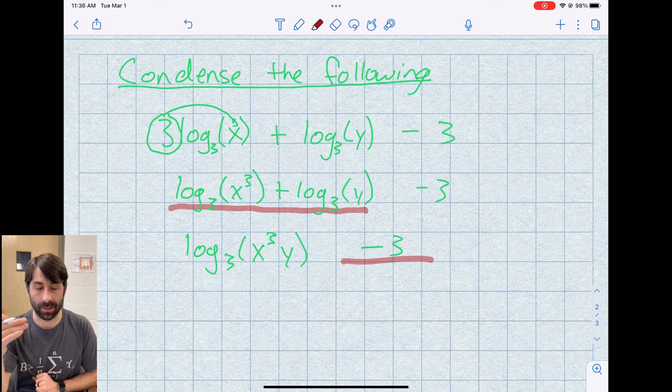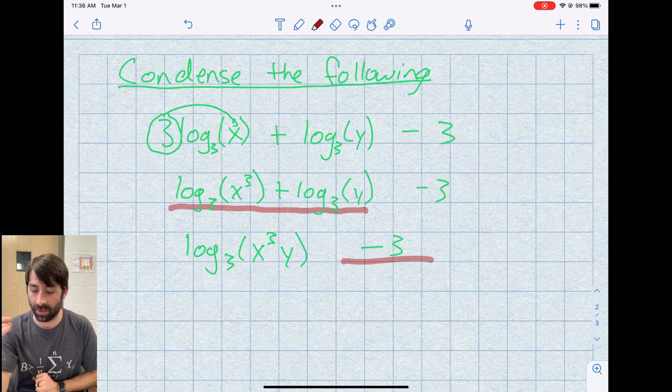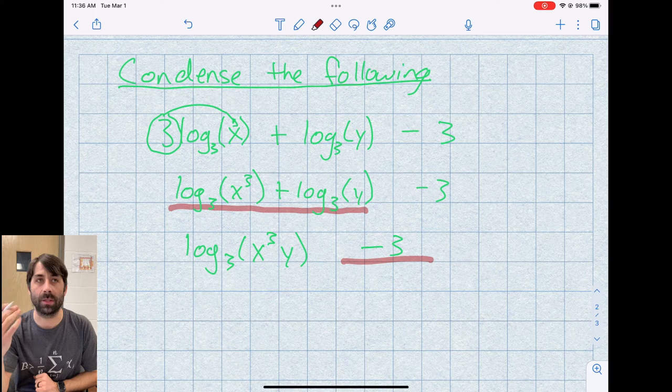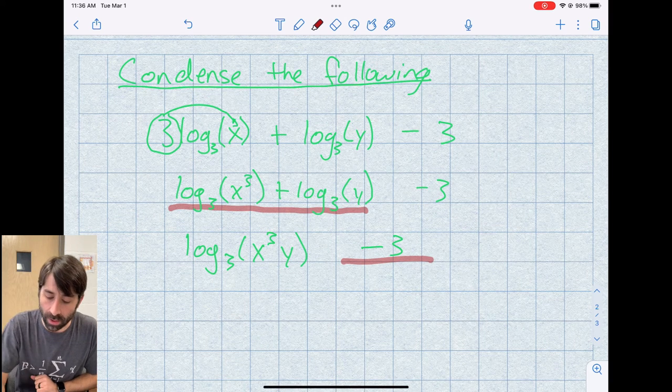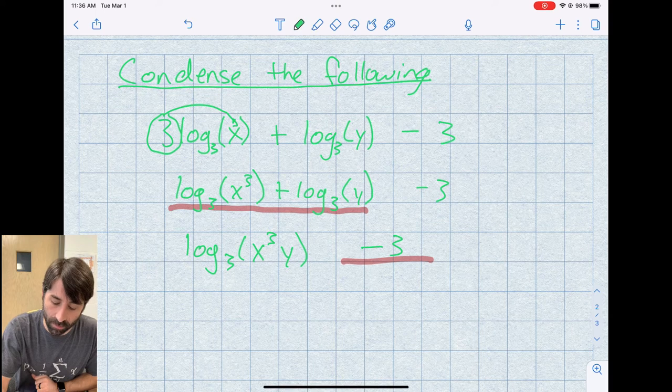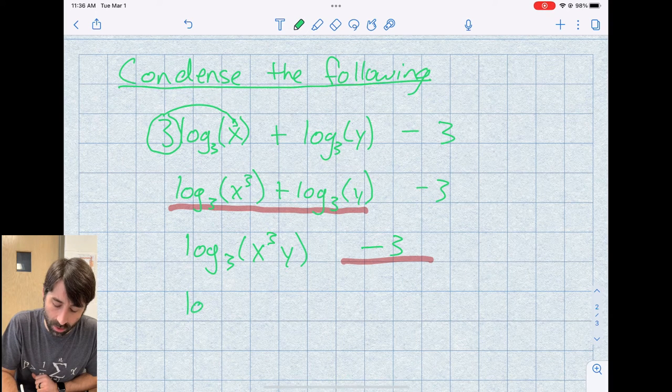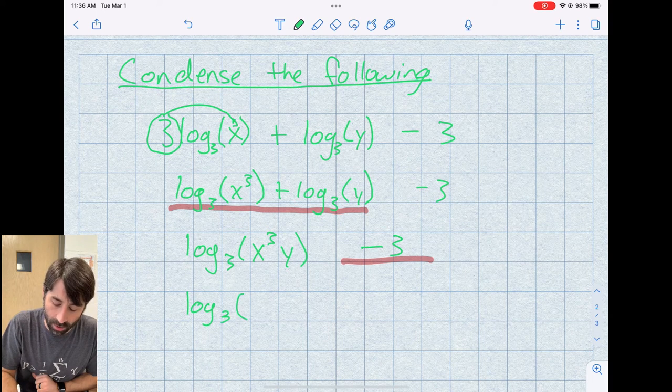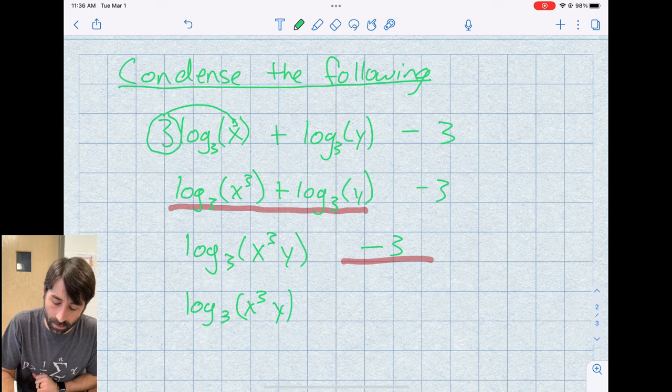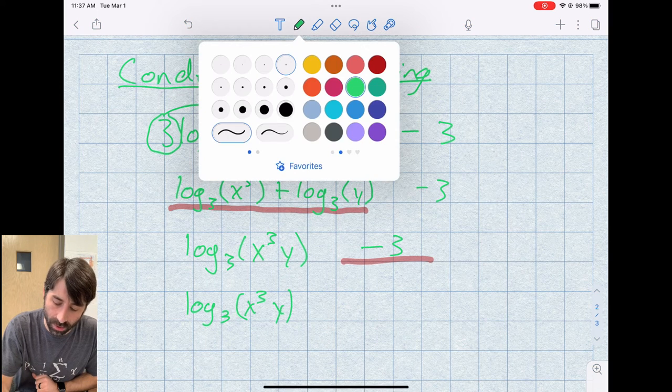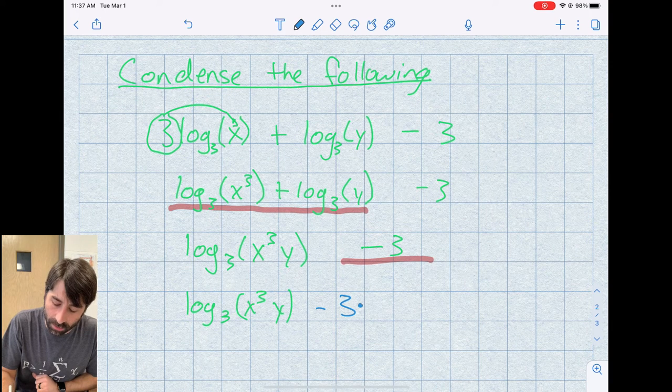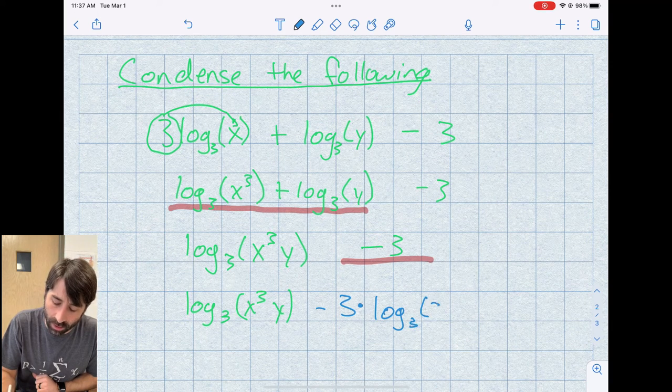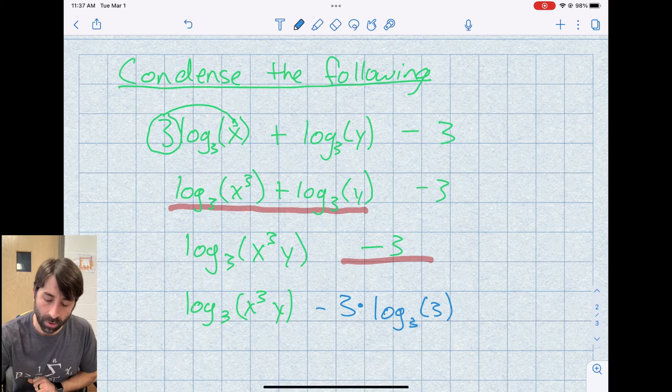And this requires, I think, just a little bit less processing power. You don't have to think about it as much, as long as you remember that identity really well. So I can rewrite this minus 3. I'll keep this first term log base 3 of x cubed y. I'm going to change colors here. And I'm going to go minus 3 times log base 3 of 3.